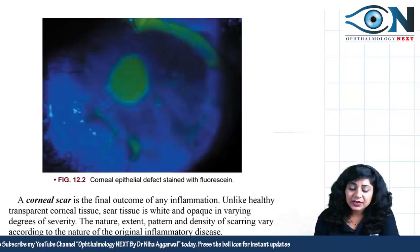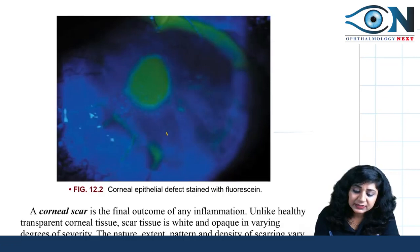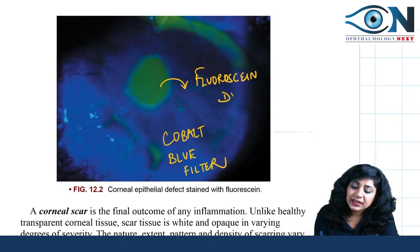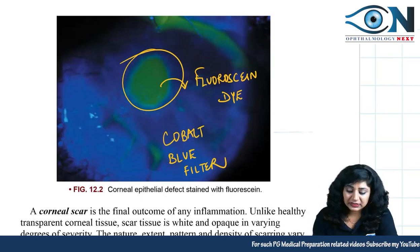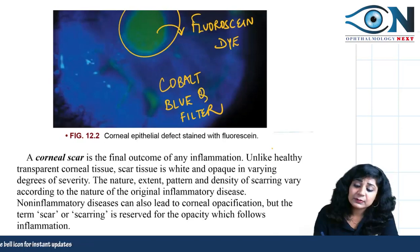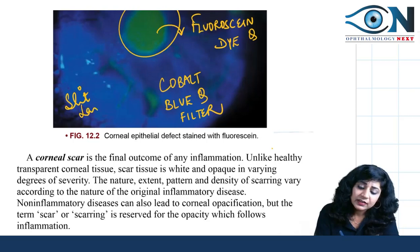This is a corneal epithelial defect visualized using the cobalt blue filter, showing greenish patches — these greenish areas are where the fluorescein dye highlights the epithelial defect. Nowadays, exams ask about the filter name, the dye name, and the procedure. This is a slit lamp finding, and all these details have become important to know.